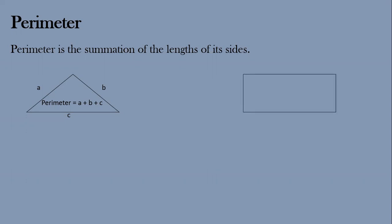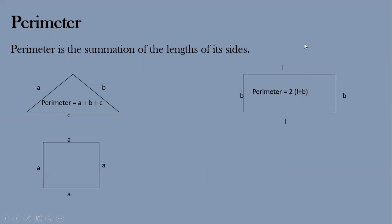Now this shape looks like a rectangle, having length l and breadth b. The perimeter of a rectangle is 2 into (l + b). That's because there are two lengths — since opposite sides of a rectangle are equal, both lengths add to 2l, and both breadths add to 2b — giving us 2(l + b).